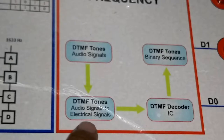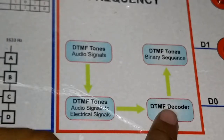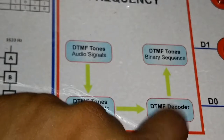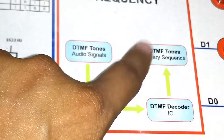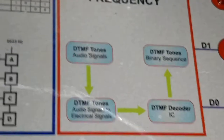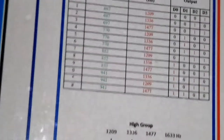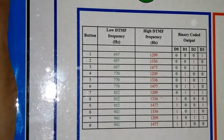The audio signal is converted to an electrical signal. Then the electrical signal goes to the decoder IC. The decoder IC produces a binary sequence output.